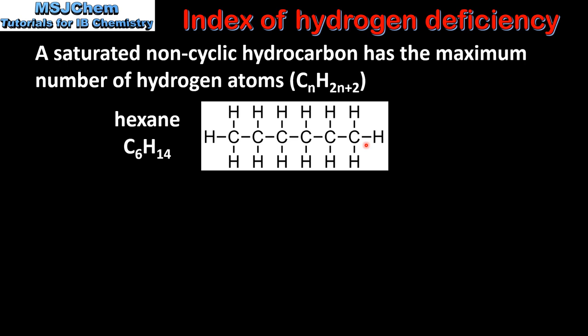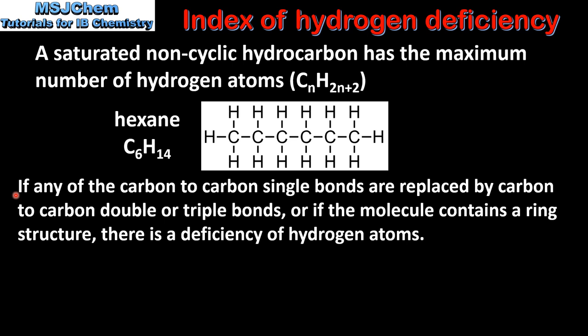If any of the carbon to carbon single bonds are replaced by carbon to carbon double or triple bonds, or if the molecule contains a ring structure, there is a deficiency of hydrogen atoms.